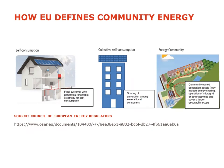The EU defines community energy in three different ways. The first is self-consumption, where an individual installs their own generation for their own use. The second is collective self-consumption, which the EU has been pushing recently — this allows communities to consume from a communal asset. You could have a block of flats with a communal solar photovoltaic installation where each resident consumes their share, or a village with a local wind turbine that they consume directly from.